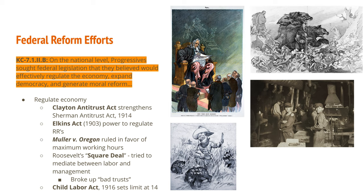Teddy Roosevelt, president in the first decade of the 20th century, had an approach called the Square Deal. He was trying to mediate between labor and management, ensuring both sides got the fairest deal possible. He also went after bad trusts — companies stifling competition and unfairly raising prices on consumers. Finally, the Child Labor Act ended child labor by setting a minimum age limit of 14, making it illegal for companies to transport goods manufactured by anyone under that age.